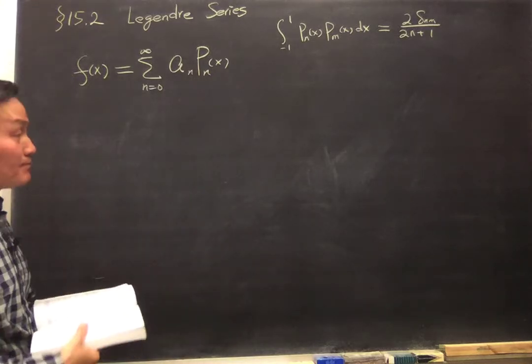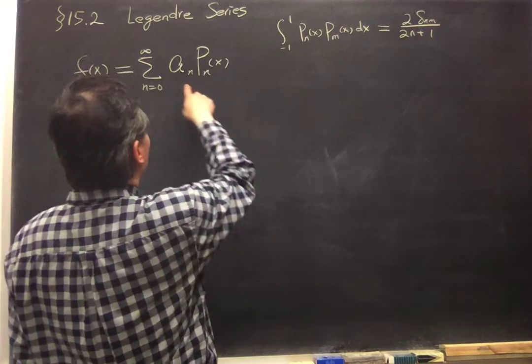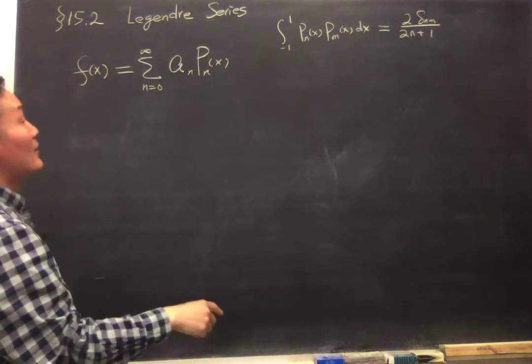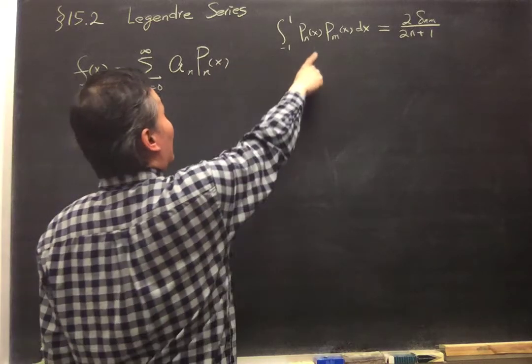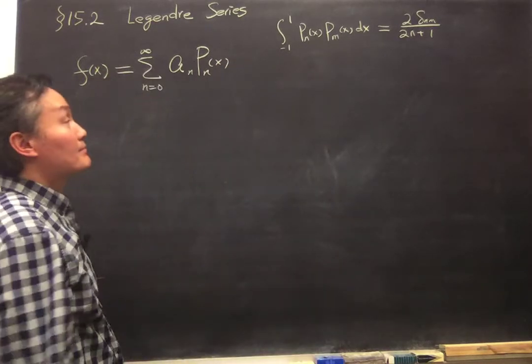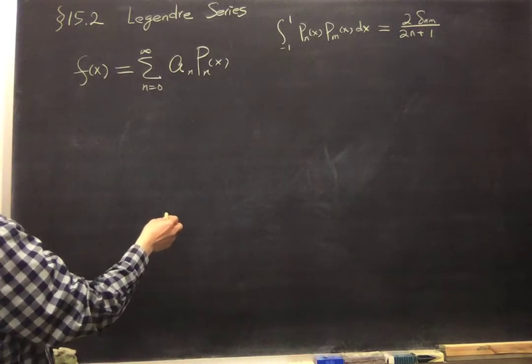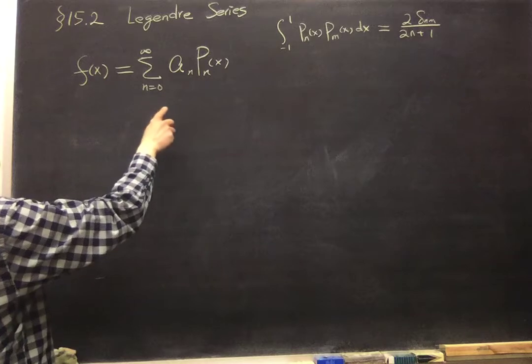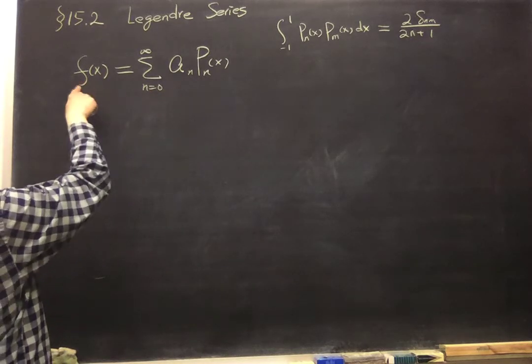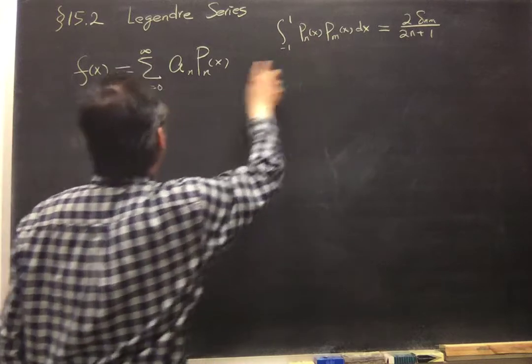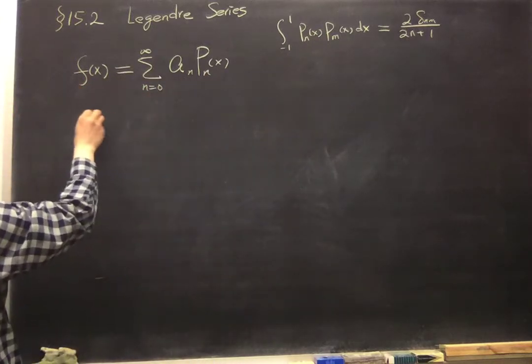And then the coefficient a_n can be found by applying the normalization relation here. So the way to do it is multiply P_m to both the left-hand side and right-hand side.